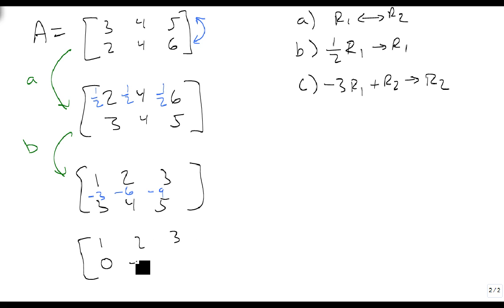So when I add these together, I get 1, 2, 3, 0, minus 2, minus 4. Minus 3 plus 3 is 0, minus 6 plus 4 is minus 2, minus 9 plus 5 is minus 4. And so this is the step C.